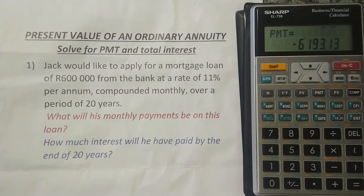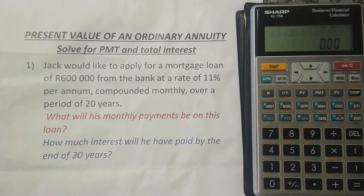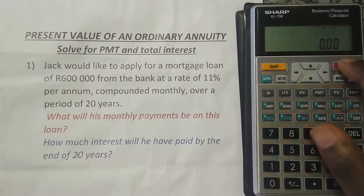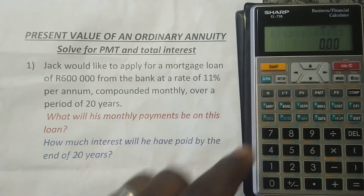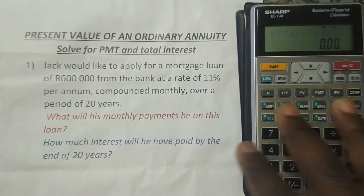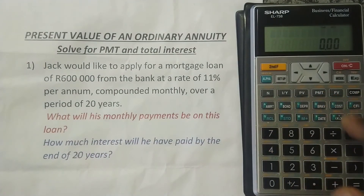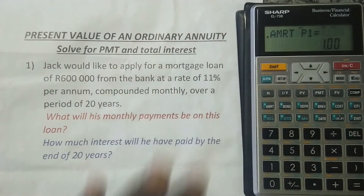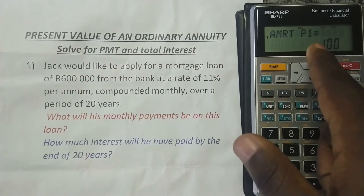I'm going to press ON/C to clear my screen — not my memory, just the screen. Now let's answer the second question: how much interest will he have paid by the end of 20 years? The calculator already has all the inputs we entered — the N, the interest rate, the PV, and the computed payment. All we need to do is view the amortization. You press AMRT, which stands for amortization. You can see it showing amortization period one, which is the starting period.